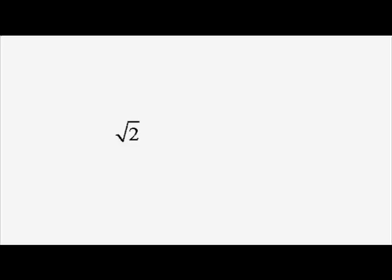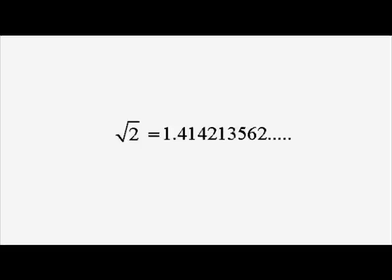However, what happens if you come to a number like 2 and try and take its square root? If you use a calculator, you'll see that the first nine decimal places look like that. But in fact, this is an infinite string of decimal places — it goes on forever and it doesn't repeat itself. It's not a recurring decimal; it's just an endless string of decimal places.